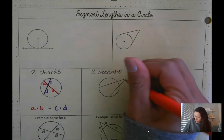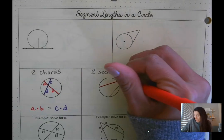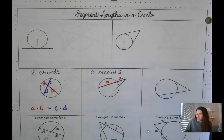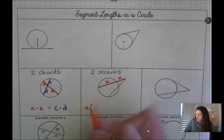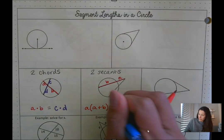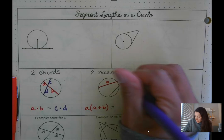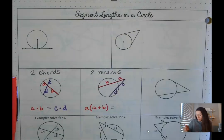Let me label this secant. We'll call this segment that's outside A and the segment that's inside B. So we know that the length of A when I multiply it with the entire segment length A plus B is going to equal C multiplied with the entire segment length C plus D.